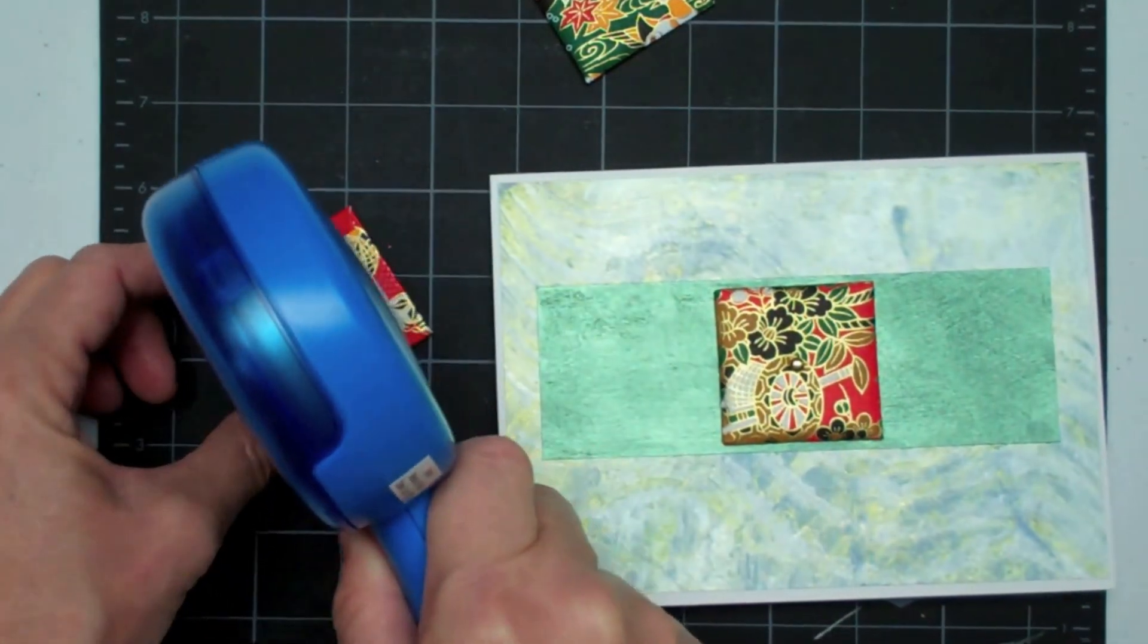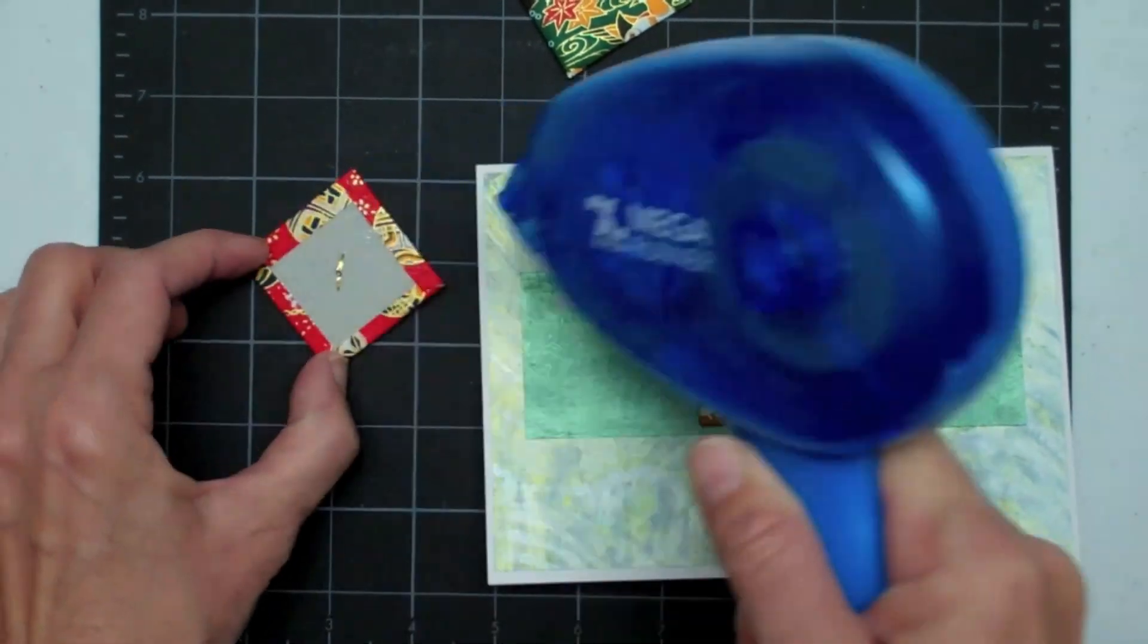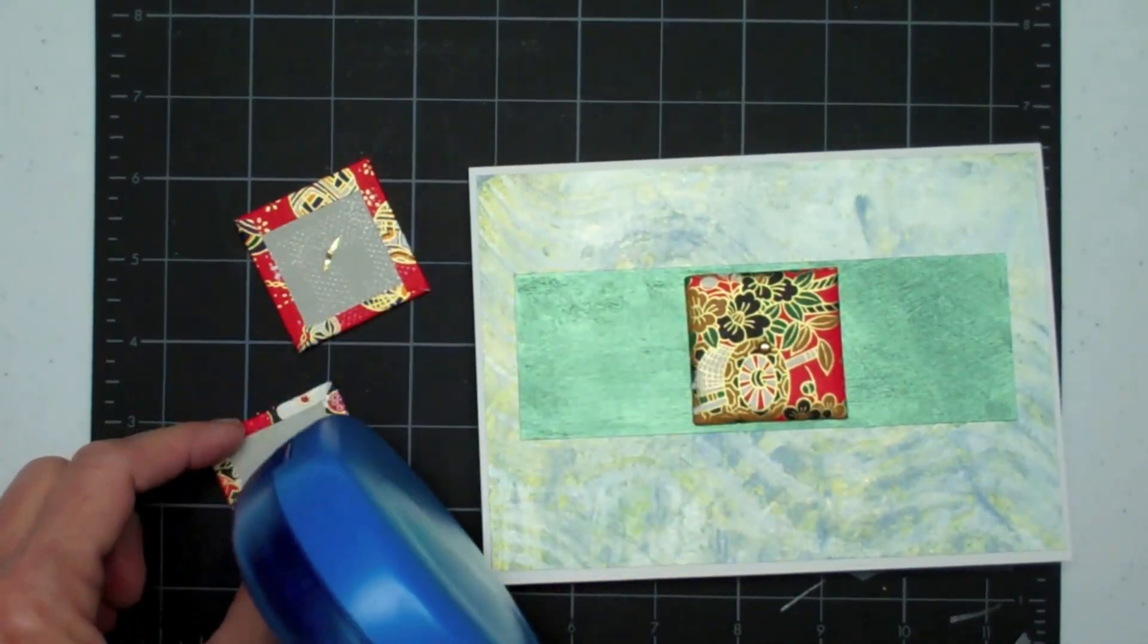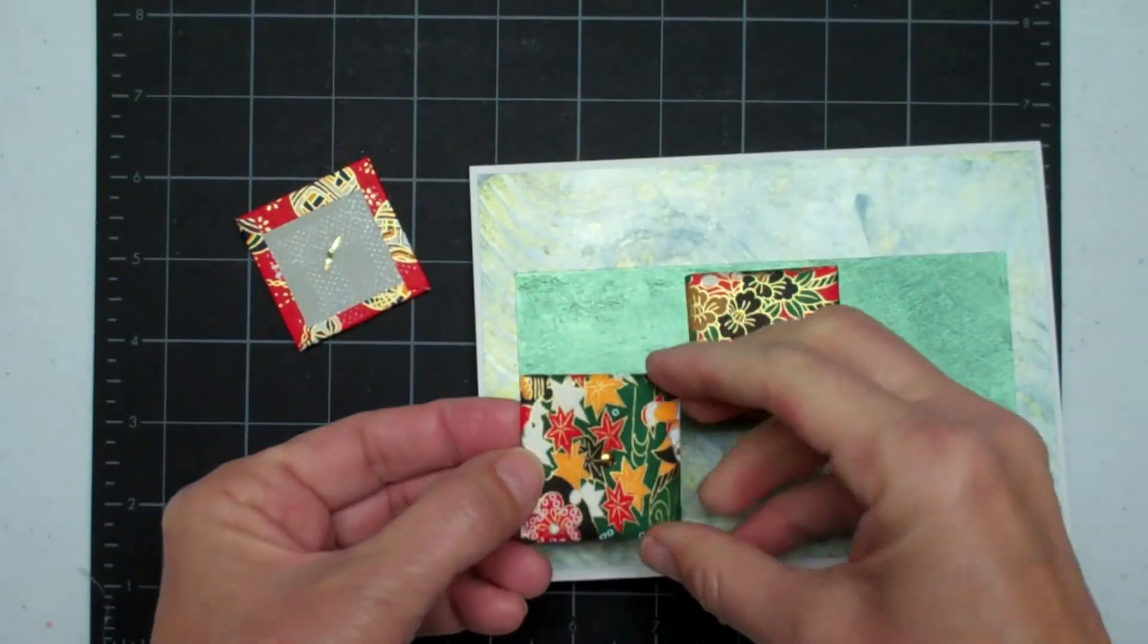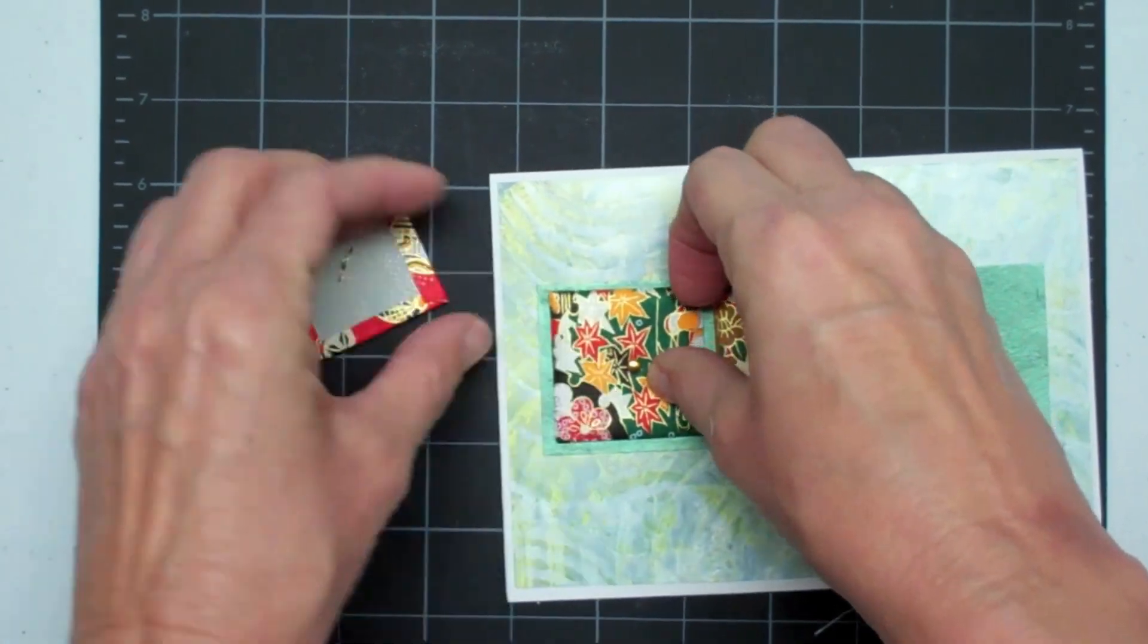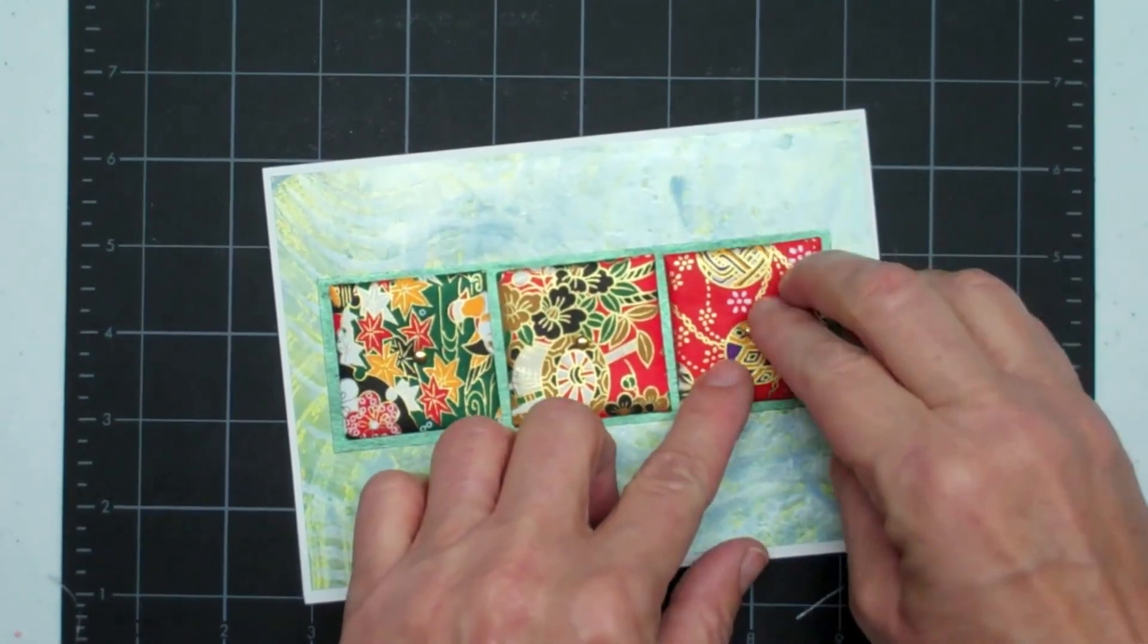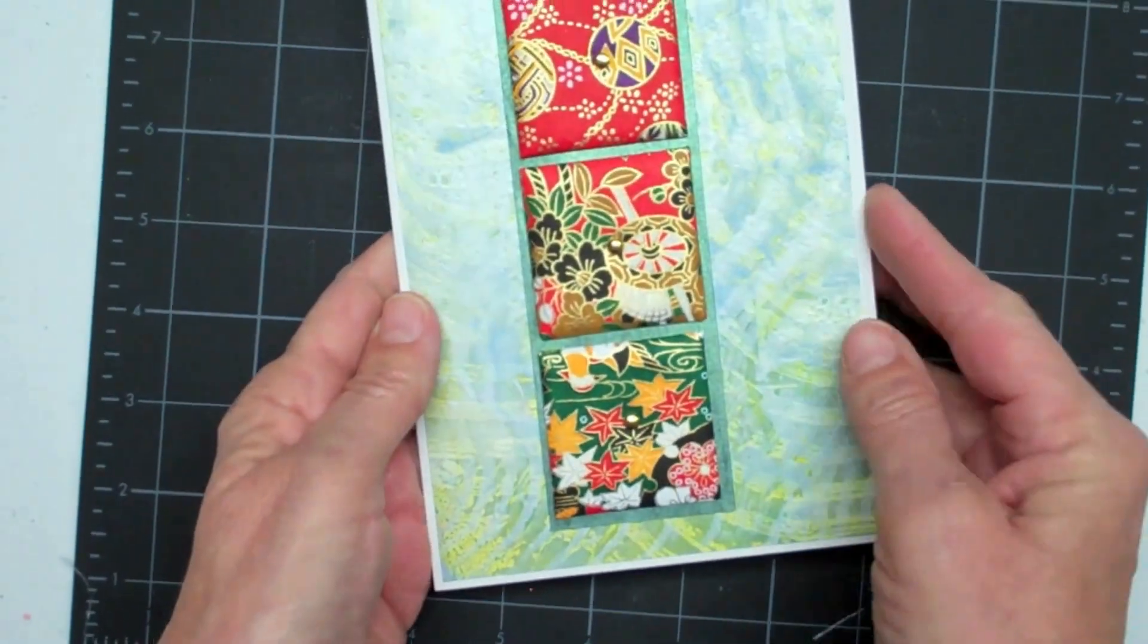I'm just going to add some adhesive on the back of this and do this on both. Now I have a pretty simple but really elegant card with them centered all over. There it is, isn't that gorgeous?